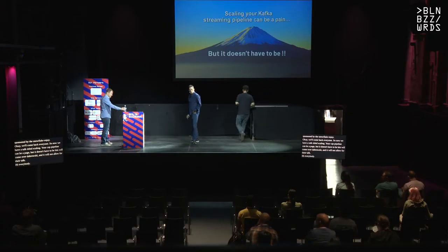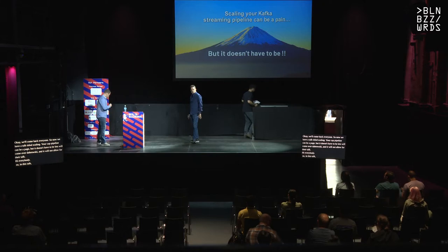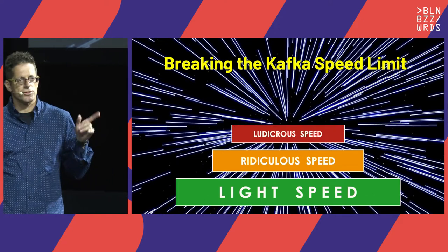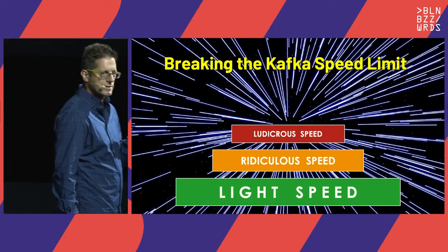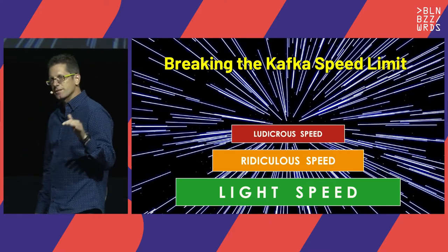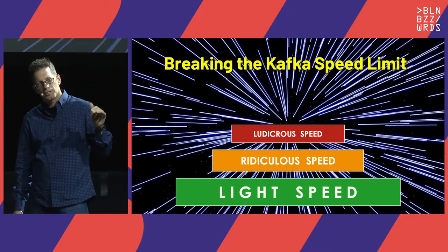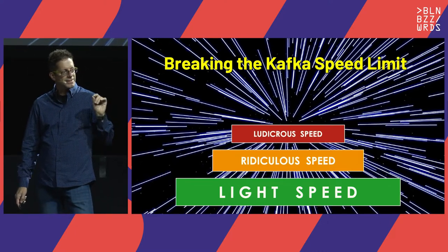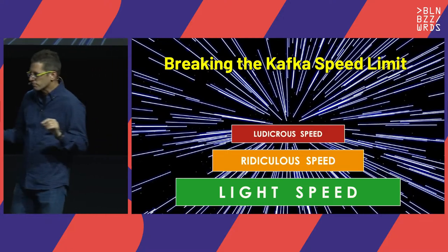In this talk we're going to talk about Kafka pipeline scale. We're going to break the Kafka speed limit — go beyond light speed, beyond ridiculous speed, all the way to ludicrous speed. Anybody here has a Tesla? So you know what ludicrous speed is. Anybody else look up the movie Spaceballs Ludicrous Speed on YouTube right after the talk. I think you'll like it — it's really funny.